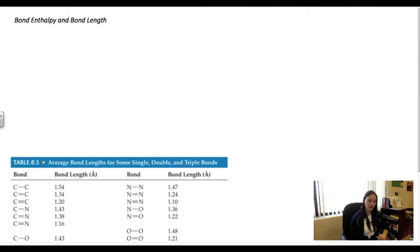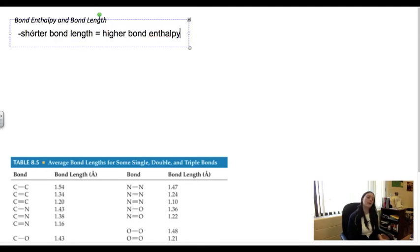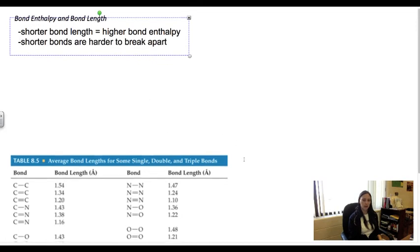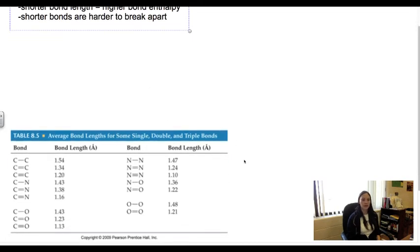The next thing here is bond enthalpy and bond length. The shorter the bond length, the higher the bond enthalpy, because that means I have to put more energy in to break it, very similar to lattice energy. The shorter the bond, the harder that is. We see there the average bond lengths for the different ones, and we should remember that carbon-carbon is the shortest when it is triple bonded and the longest when it is single bonded.